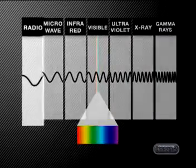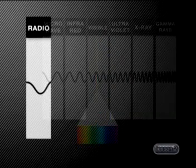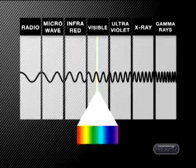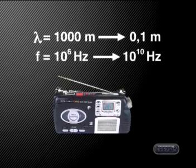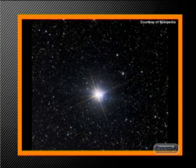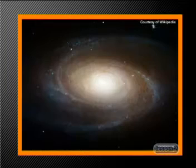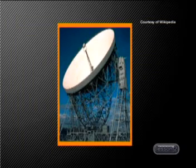First, there are radio waves. Radio waves have the longest wavelengths but the lowest frequencies. Their wavelengths range between 1,000 meters and 0.1 meters, with frequencies between 10 to the 6 hertz and 10 to the 10 hertz. Radio waves are mainly produced by very distant star systems called quasars and neutron stars called pulsars. We can detect this type of long wave radiation using radio telescopes.